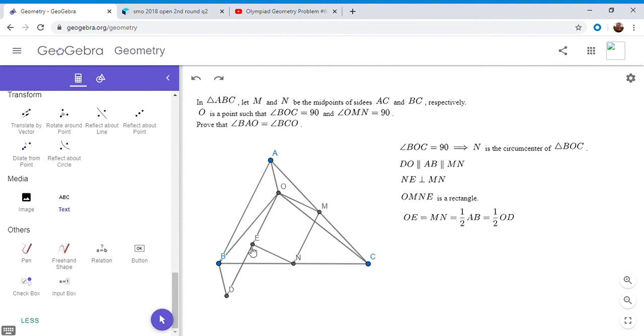Okay, so if OE is half OD, then that means OE is ED. And if OE is ED, then like I mentioned before, NO and D has to equal NO.